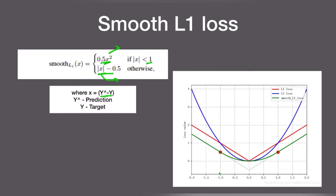If you check the graph, the extremes are minus 1 and plus 1 — this is the limit. If the error value is between this limit, it actually follows a quadratic curve because of the squared term. Once it crosses these regions on both extremes, it becomes linear. So the smooth L1 loss curve behaves like a quadratic curve within this range and becomes linear once it crosses the range.